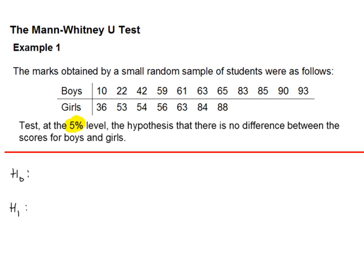The Mann-Whitney U test is used to test for a difference in population averages. So you could be testing for a difference in the population mean or in the population median.